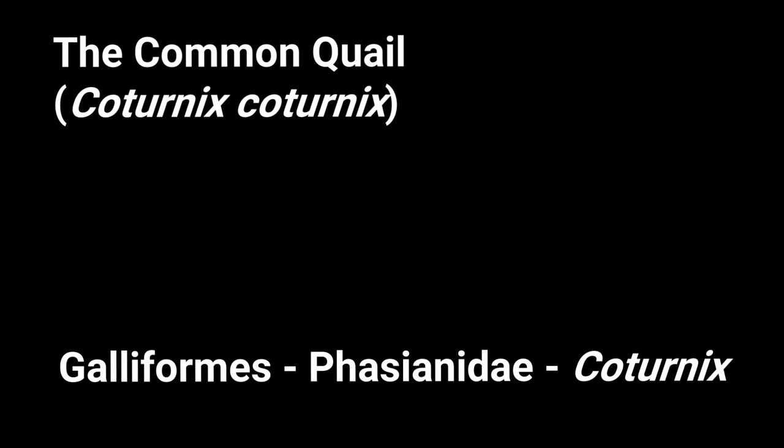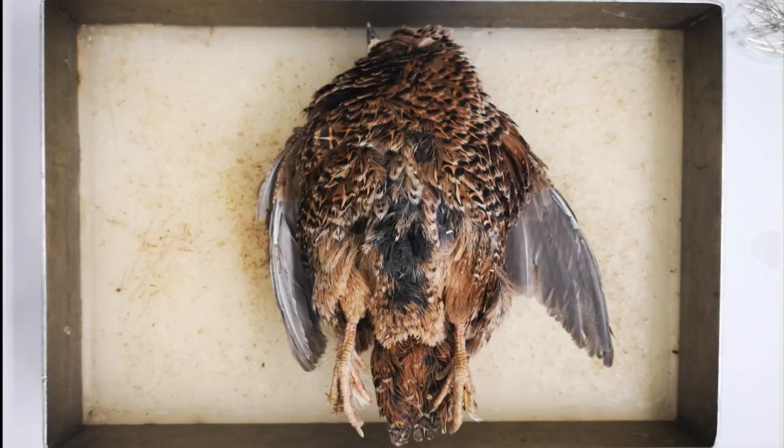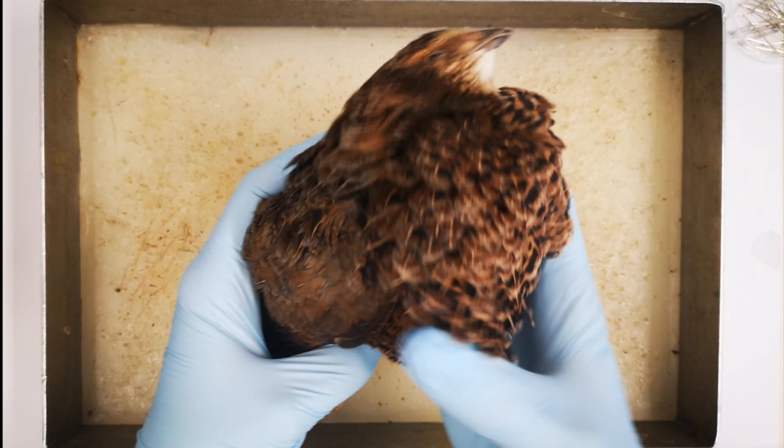Our first preparation for this video is the European or common quail, Coturnix coturnix. This is a phasanid old-world quail, and is not closely related to American quails in the family Odontophoridae. The common quail is found in almost all of Europe.